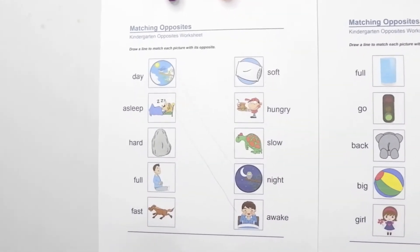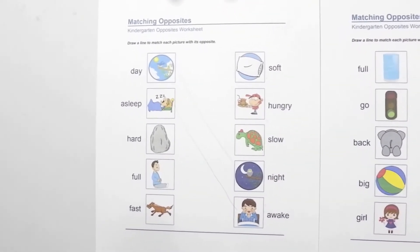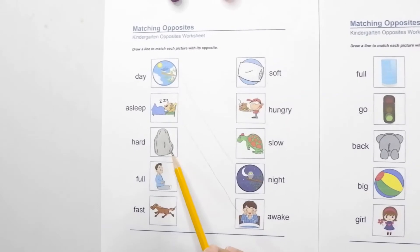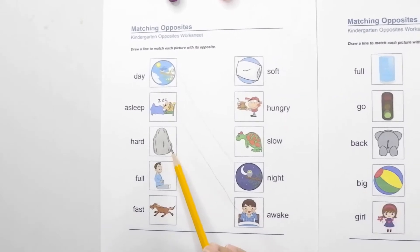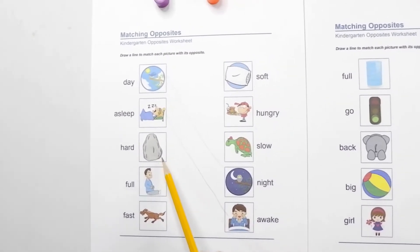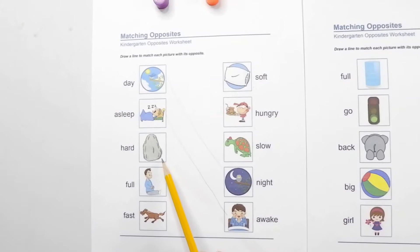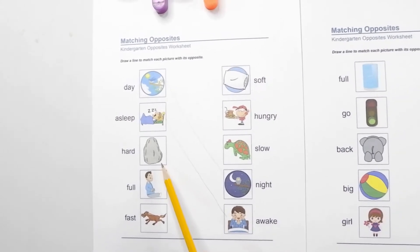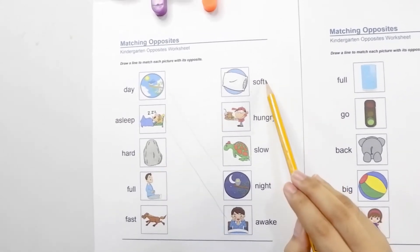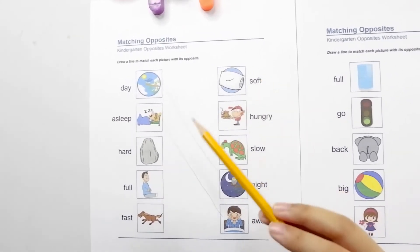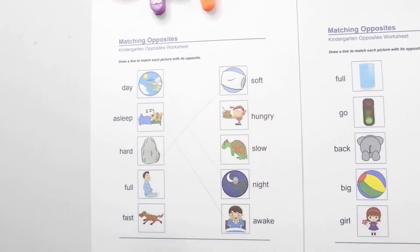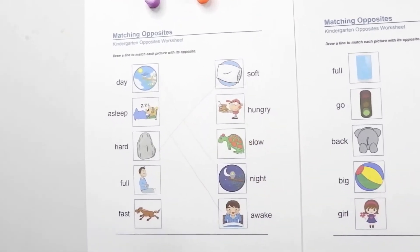Okay, next one. The picture is hard — that's a rock and it's very hard. Hard directly contrasts with soft, just like this pillow. So let's match it. Hard and soft are opposites.